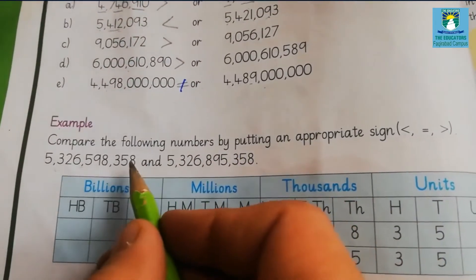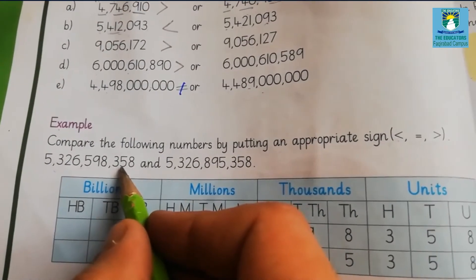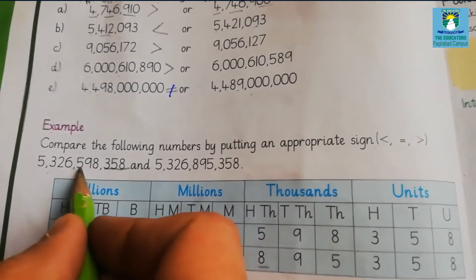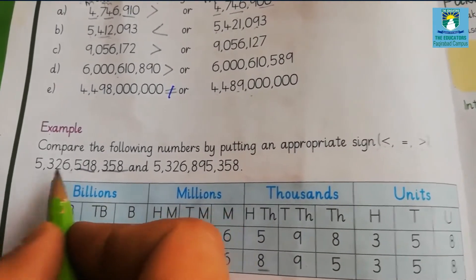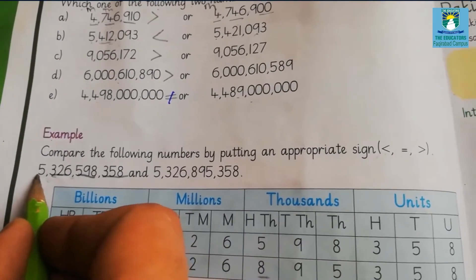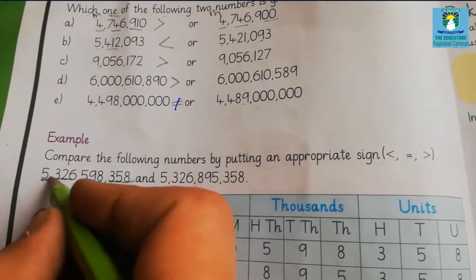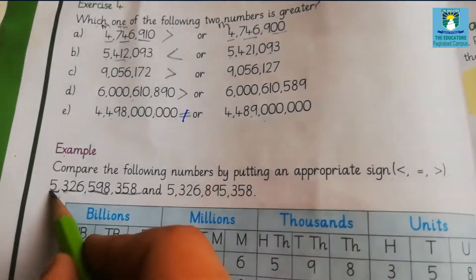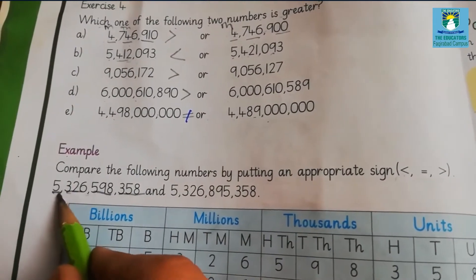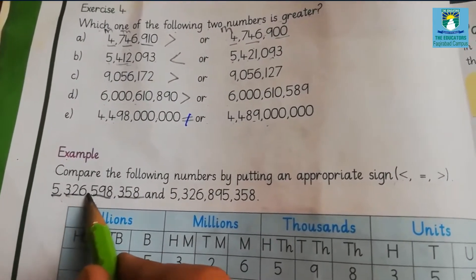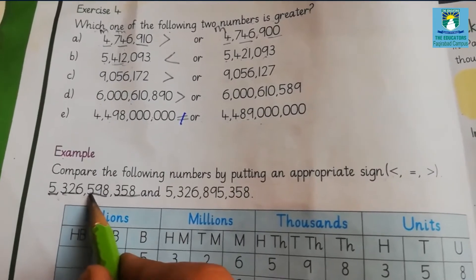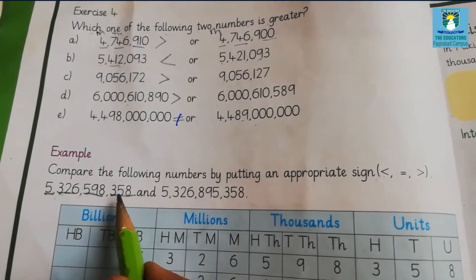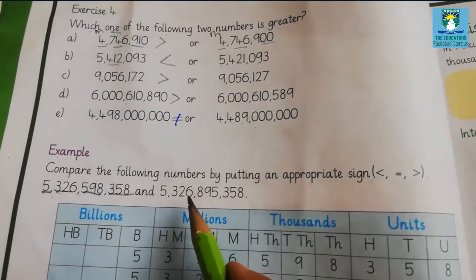First we will convert these values into periods — units period, then thousands period, then millions period, and billions period. So we will read the first value as 5,326,598,358.